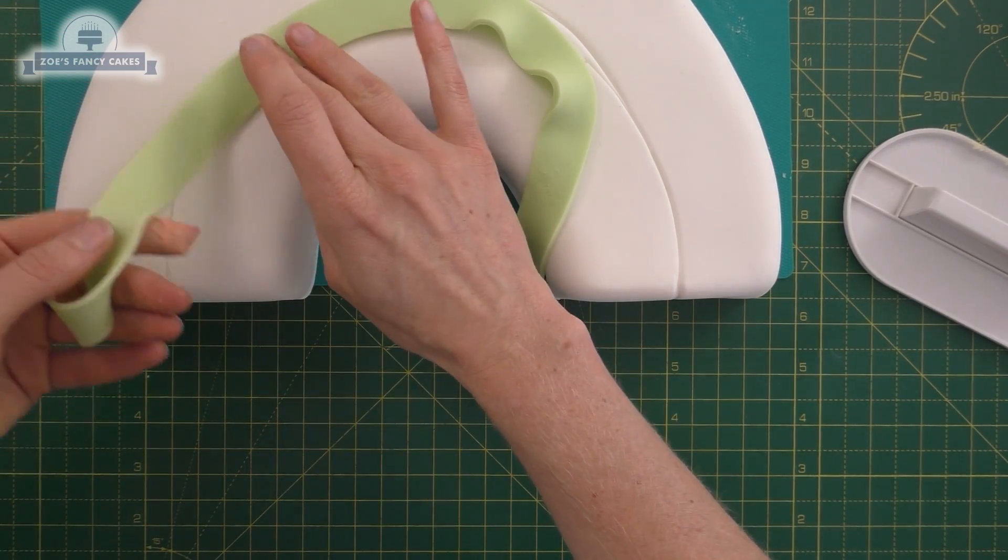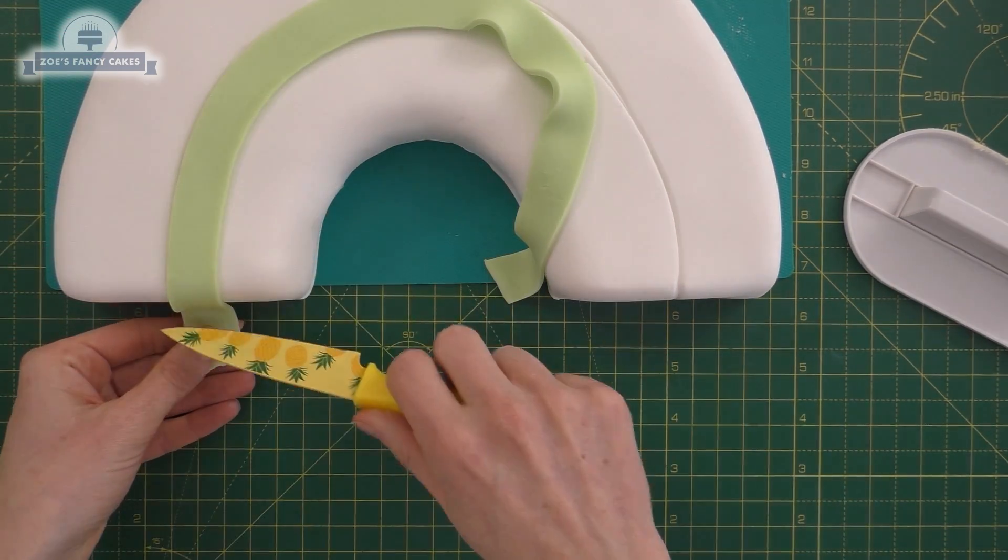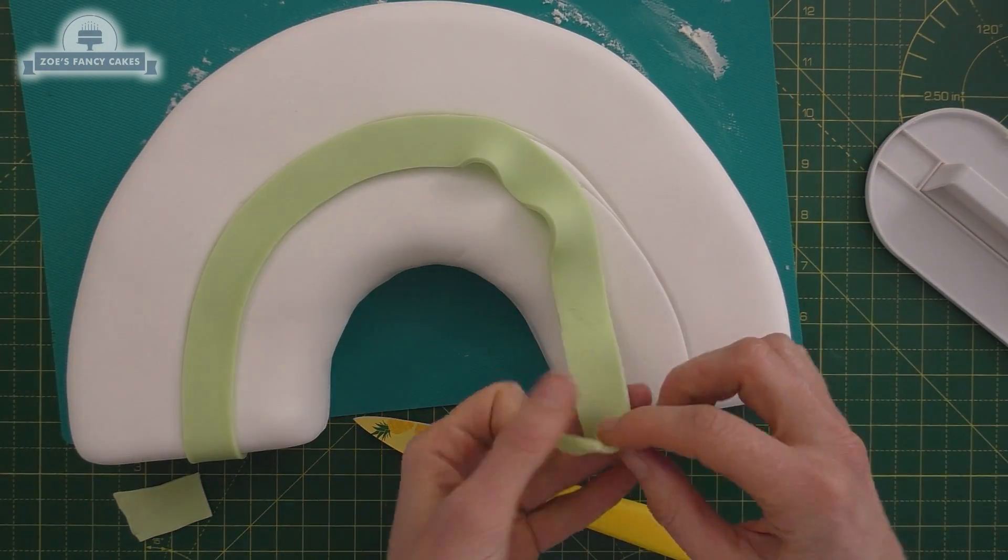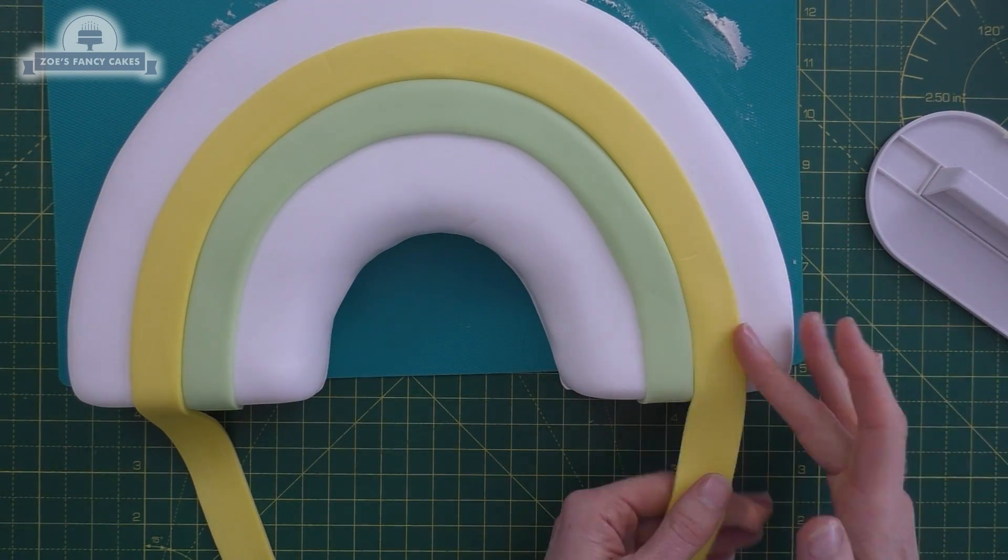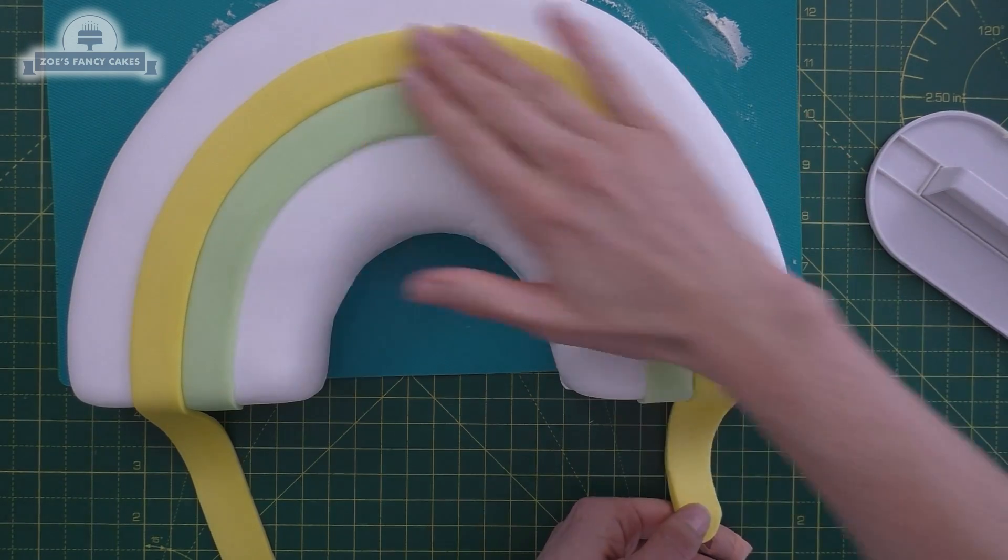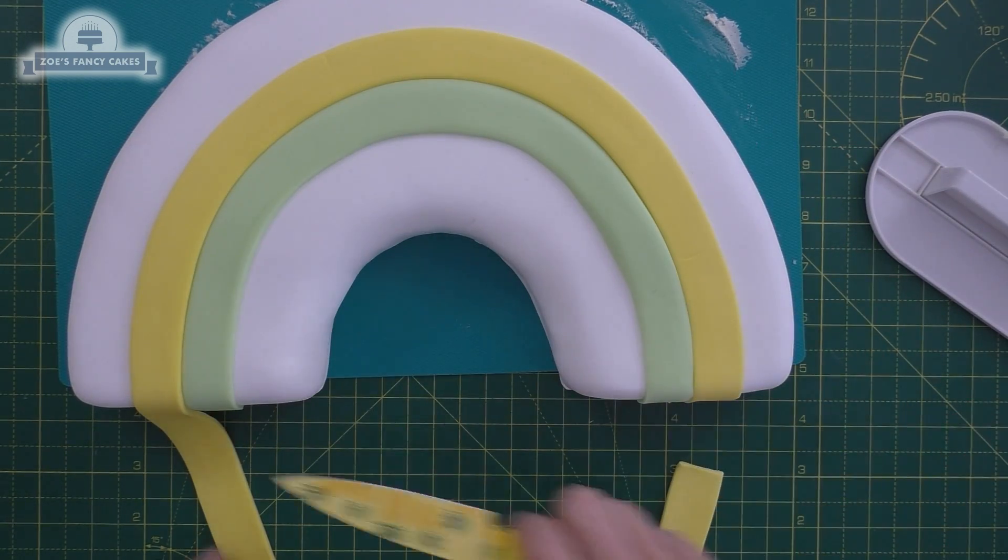We're going to cut a little strip and then you can just put a small amount of water onto the white underneath where the stripe's going to go. So the next one is just going to be my yellow one. Just do exactly the same thing, try and cut it a similar width if you can to the green one.